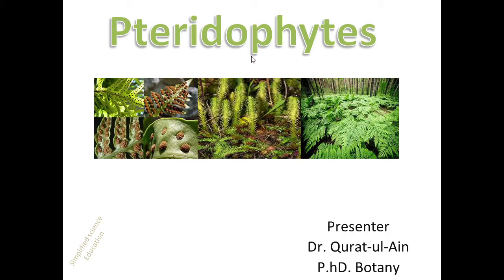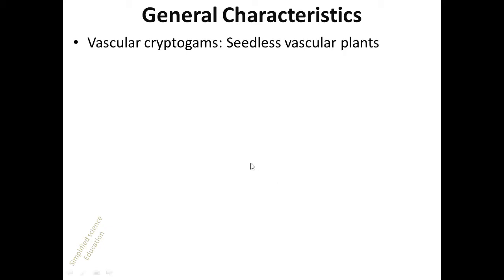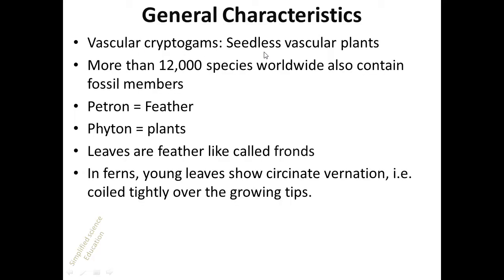This video is about pteridophytes and is the third video on plant kingdom. Pteridophytes are vascular cryptogams — cryptogams mean they are spore-producing plants, and vascular means they have vascular bundles, so they are actually seedless vascular plants. They have more than 12,000 species worldwide and also contain fossil members.